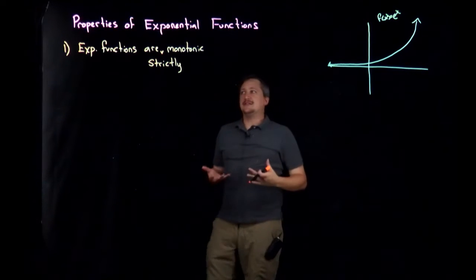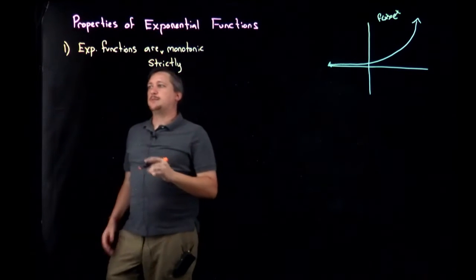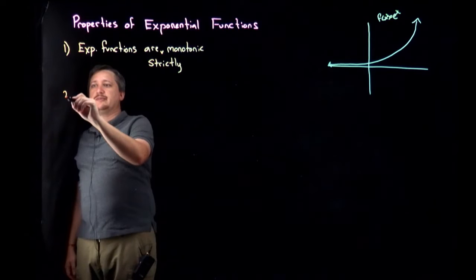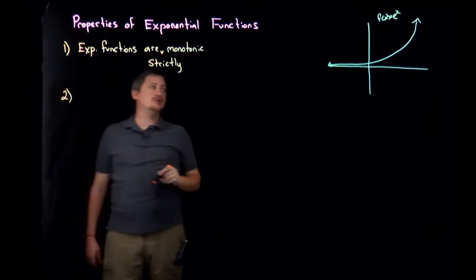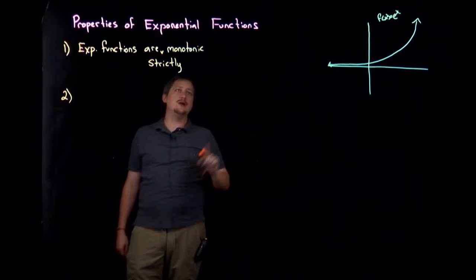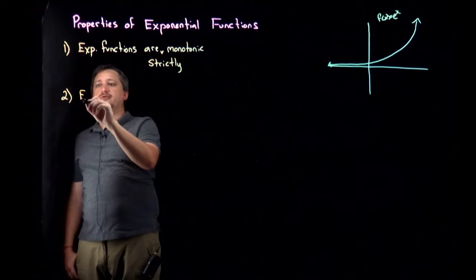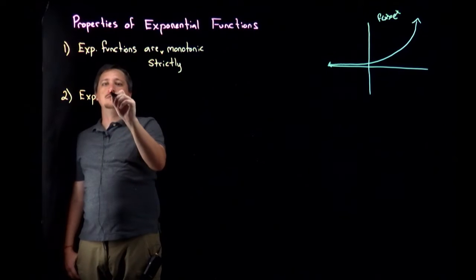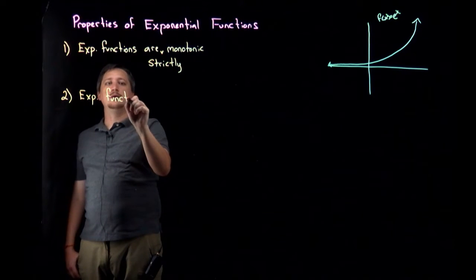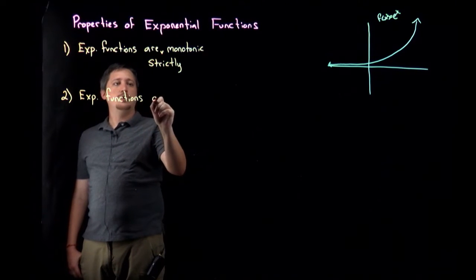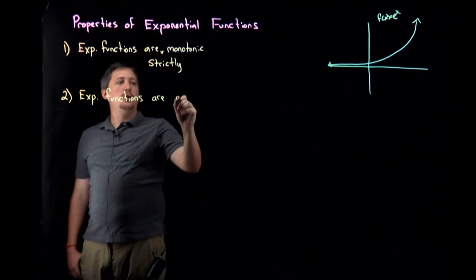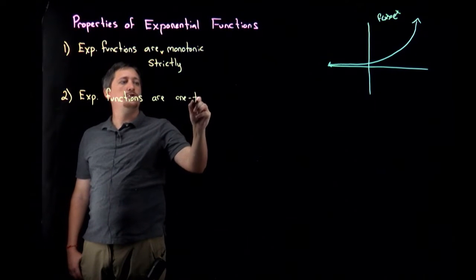Now this is actually really important because it makes us or gives us the second property - and this is another one that we mentioned in the library of functions, but this is the one that we're really going to exploit a lot both now and when we talk about logs - which is that exponential functions are one-to-one.